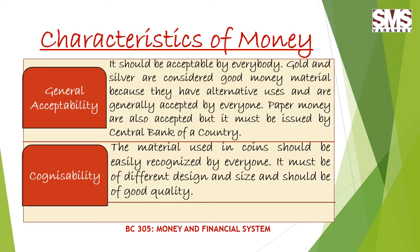The next characteristic of money is general acceptability. Money should be acceptable by everybody. Gold and silver are considered good money material because they have alternative uses and are generally accepted by everyone. Paper money is also accepted but it must be issued by the central bank of a country. Money must be of such type that it is acceptable by everyone within a society, and in the case of paper money it must be issued by the central bank, like the Reserve Bank of India.